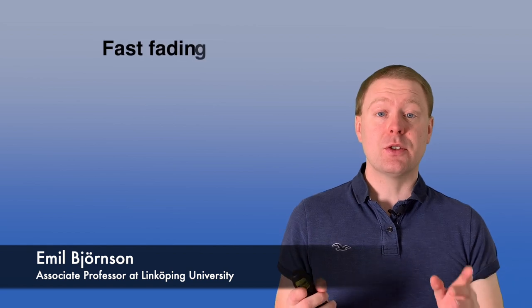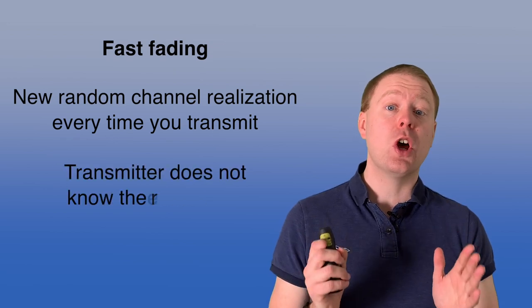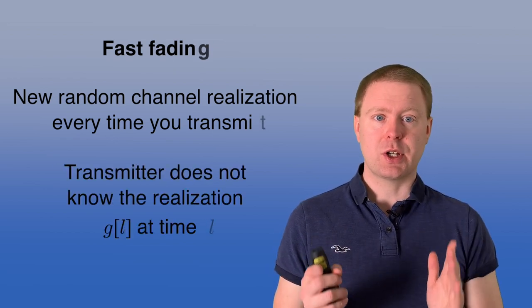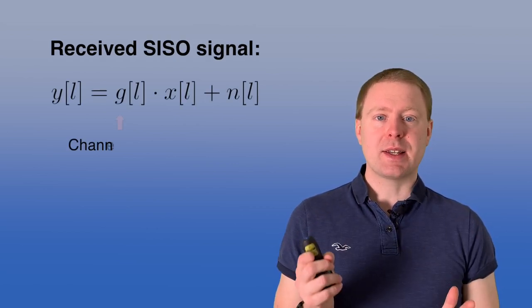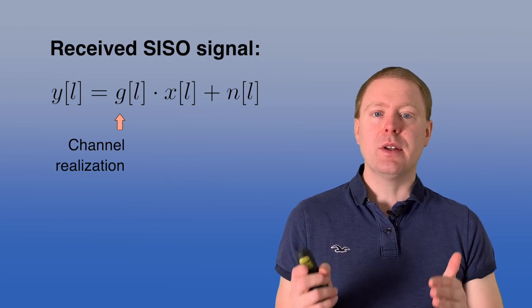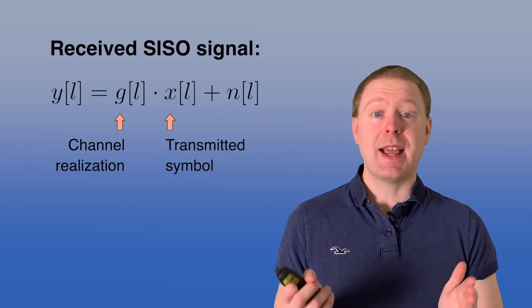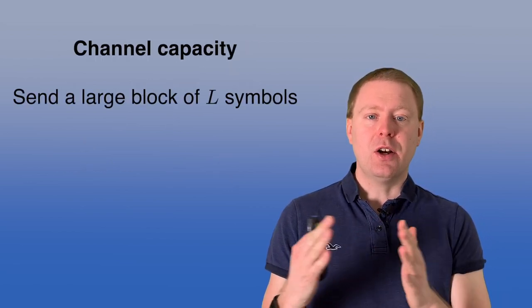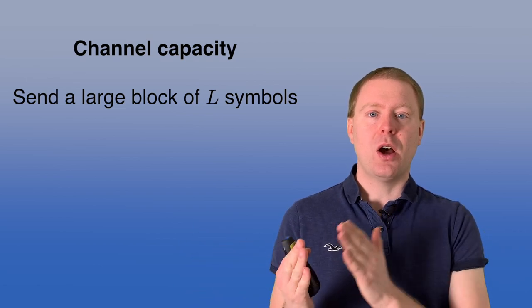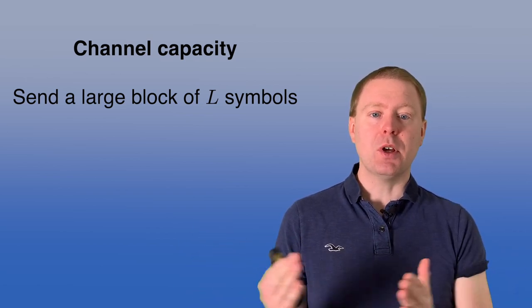In a fast fading channel, you get a new channel realization every time you transmit something. So it makes good sense that the transmitter cannot know in advance what the channel is going to be. The received signal in the SISO system at time L will be a realization G_L of the channel times the symbol transmitted X plus noise N_L. And the capacity in this case is achieved by having a large number L of different symbols — a block of them.